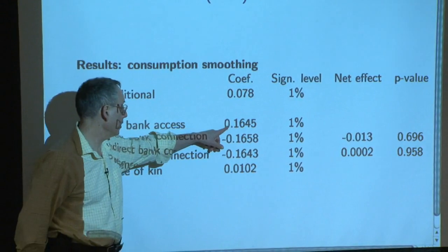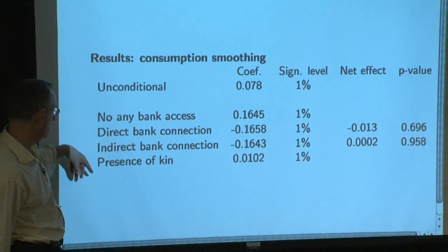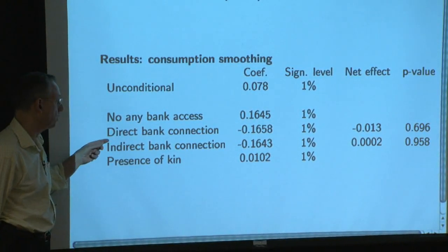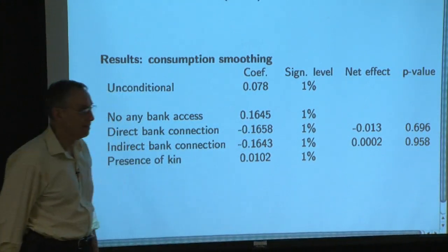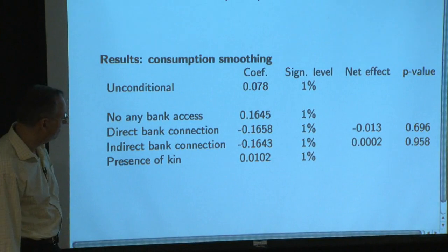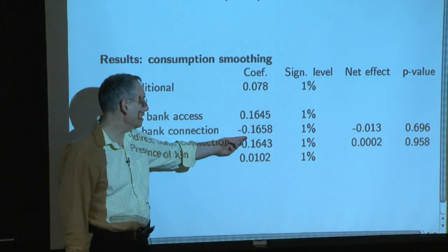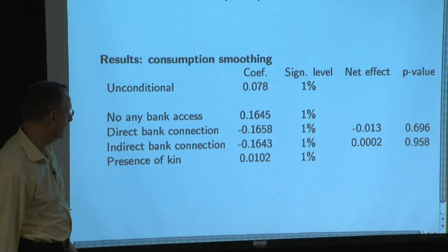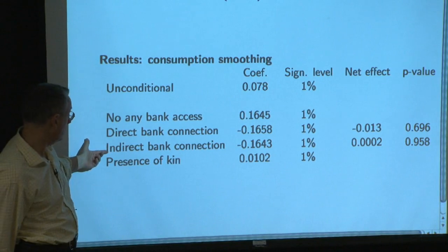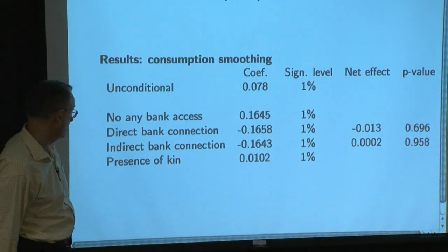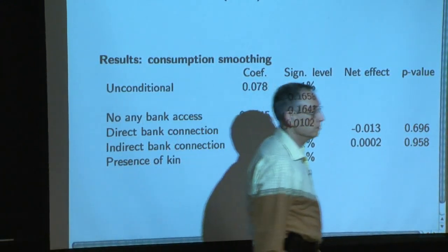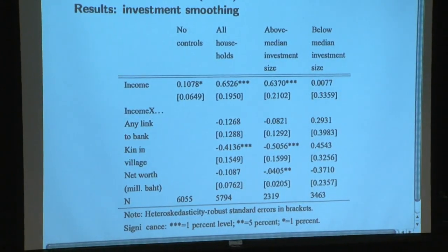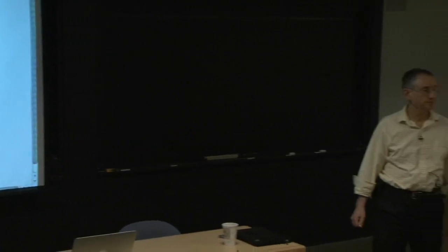For those without any direct or indirect access, this is the vulnerability coefficient. This is how much you'd subtract if you look at direct bank membership — the sum of these things is insignificantly different from zero, meaning you've achieved the benchmark. But equally interesting: when you have indirect connections, you're subtracting off virtually the same number. Kin didn't help in the consumption case. The question of whether having both direct and indirect connections helps: indirect means both in the labeling here.